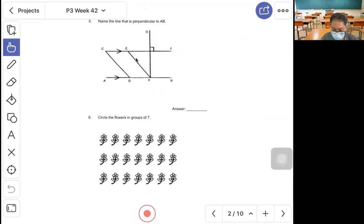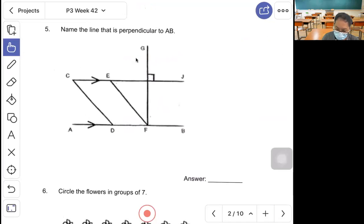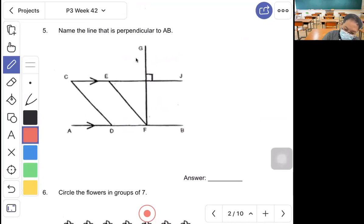Question 5, name the line that is perpendicular to AB. Perpendicular forms a right angle. AB is this line, so that will be GF or FG.